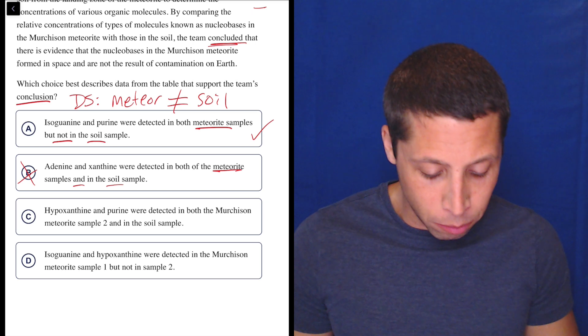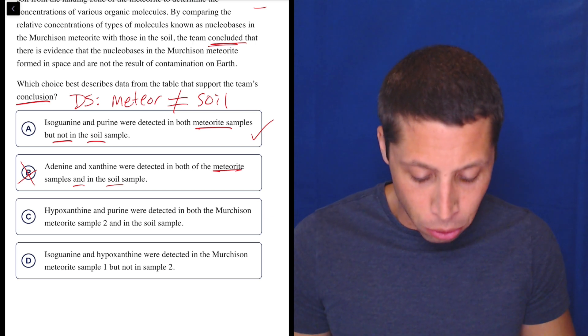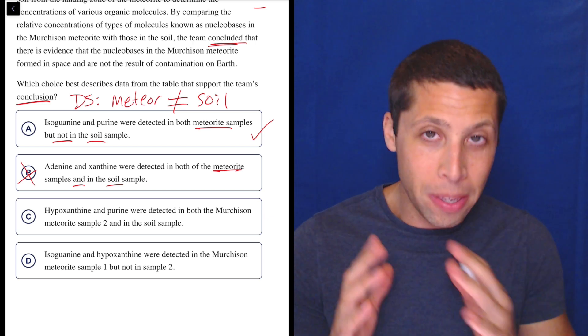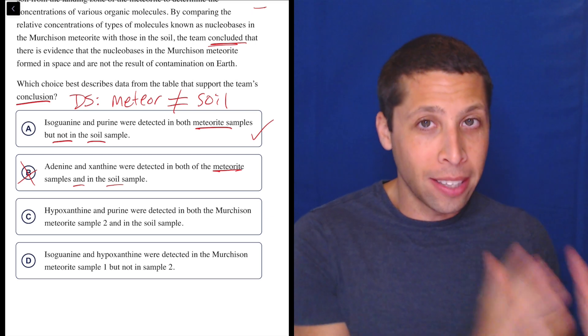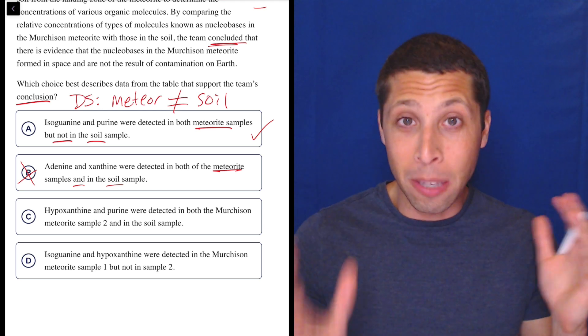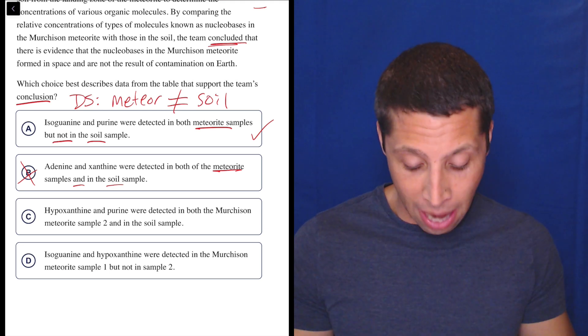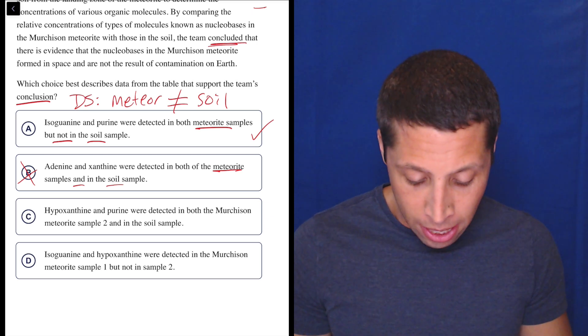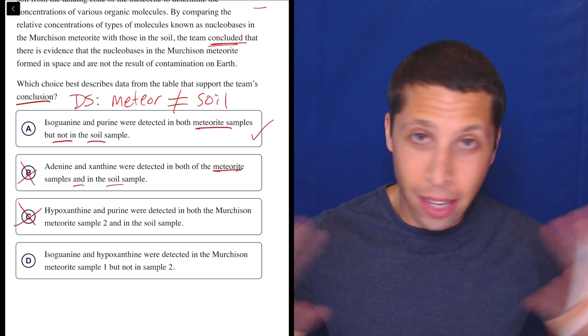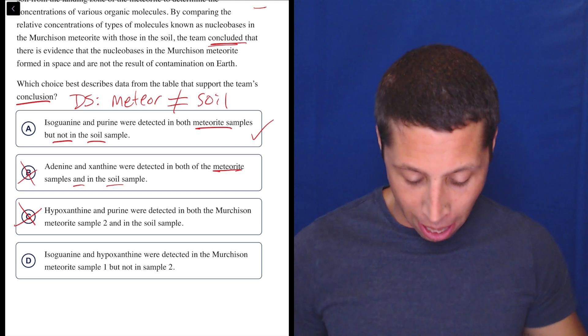C, hypoxanthine and purine were detected in both the Murchison meteorite sample 2 and in the soil. Again, this seems to be saying the meteorite and the sample are the same. The soil and the meteorite are the same. They both have this chemical. I really want to say that they're different in some way. So, that doesn't look good. You know what? I'm not even going to bother to check if it's true. It does not match my summary. Stick with that.